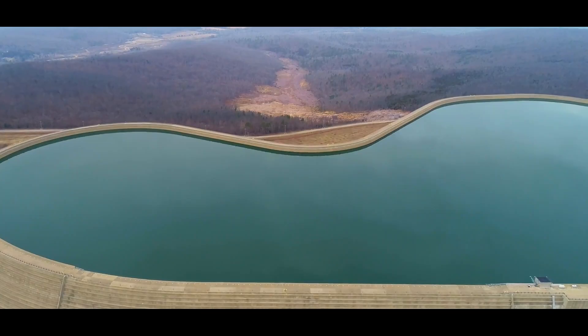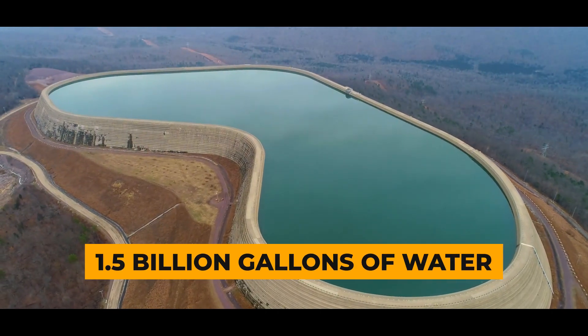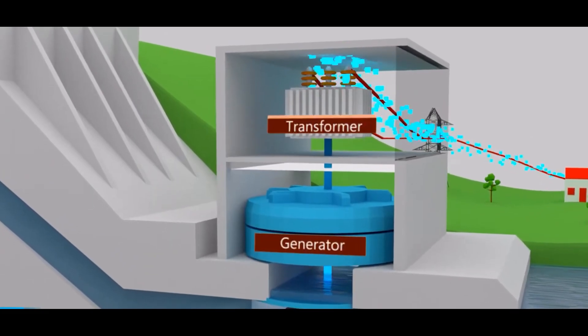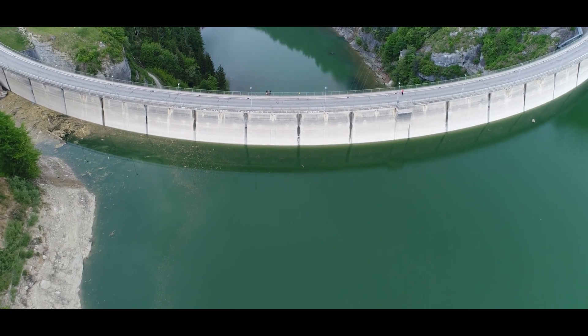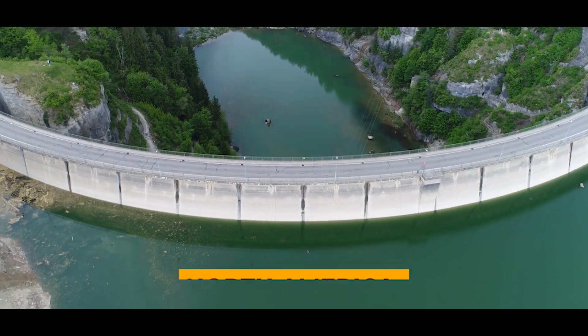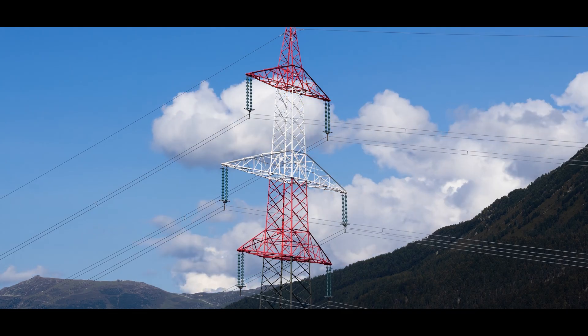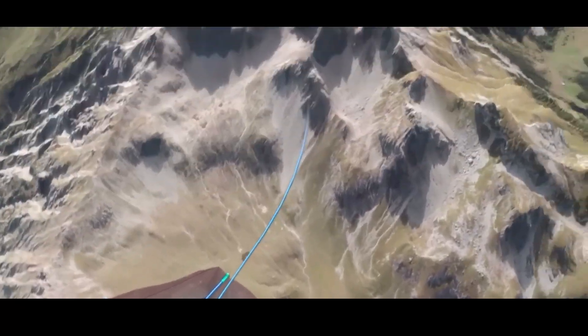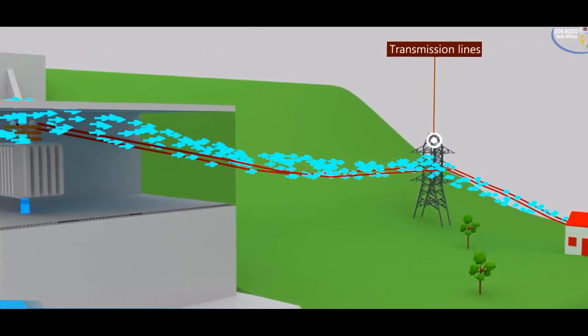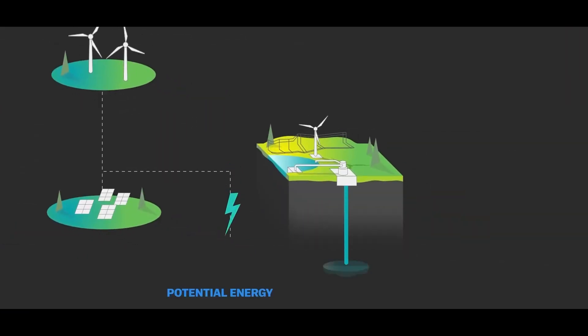Located atop Prophet Mountain, this kidney-shaped reservoir holds 1.5 billion gallons of water, creating a significant potential energy head. The rebuilt structure is the largest roller-compacted concrete dam in North America. During off-peak hours, excess electricity from the grid is used to pump water back from the lower reservoir to the upper reservoir, replenishing it for the next generation cycle. This creates a closed-loop system that stores energy for future use.